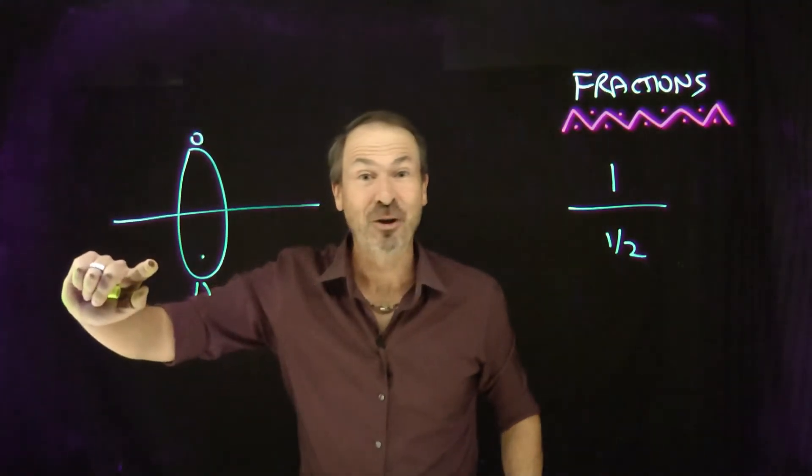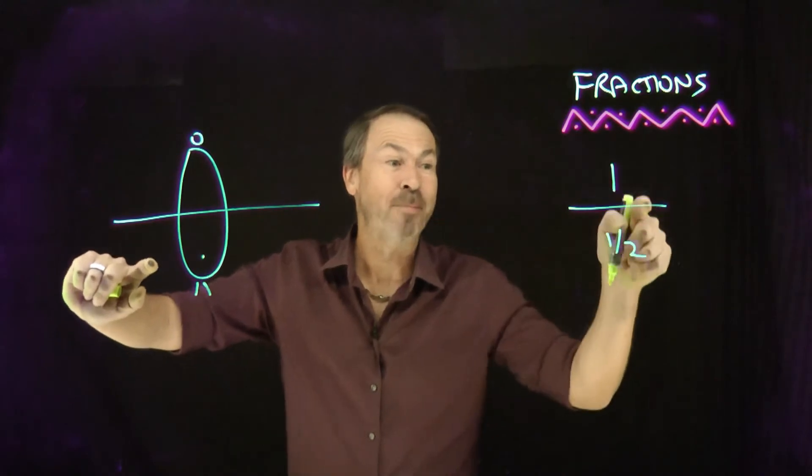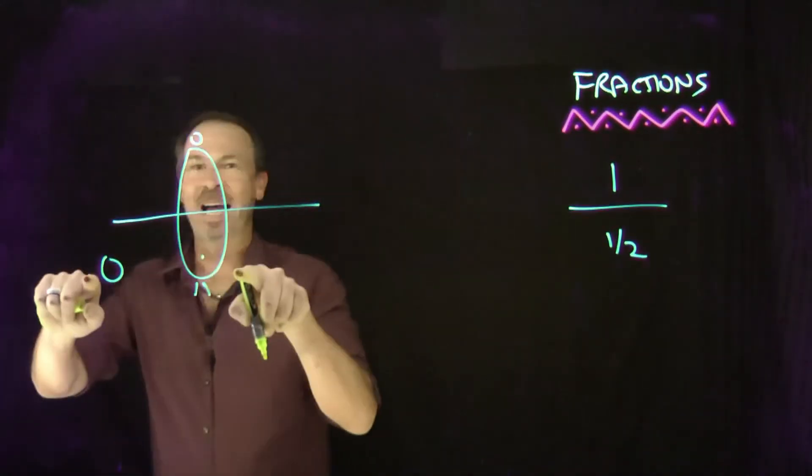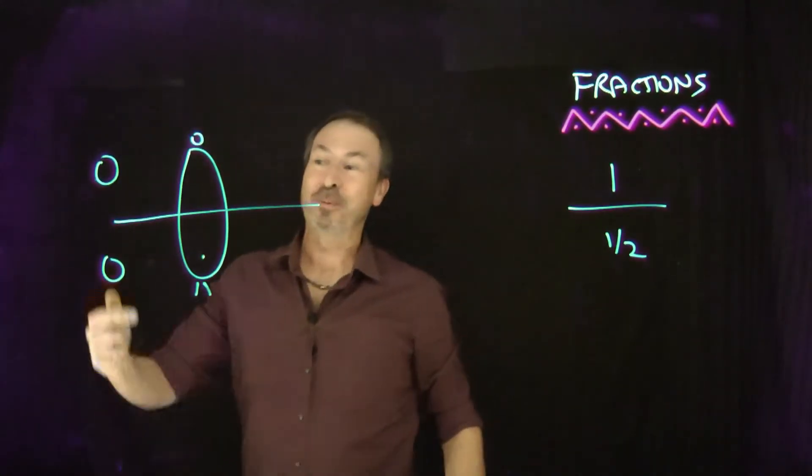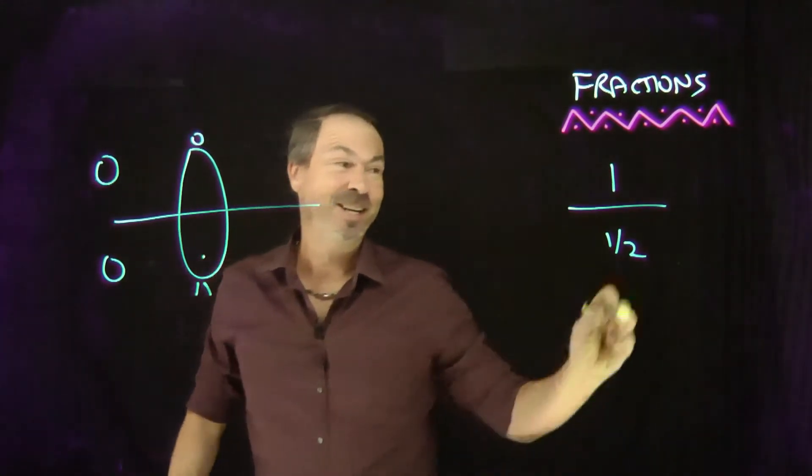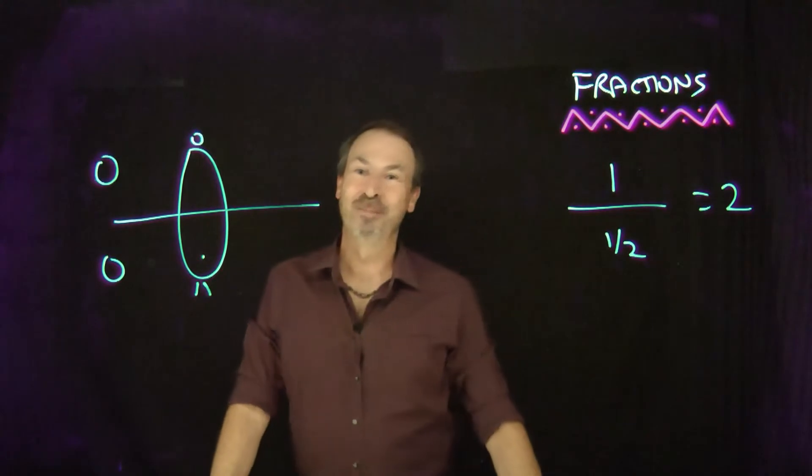But here's half a student. How much pies does it get? One half a student gets a whole pie. One pie for half a student. One pie for this half. There's another half a student. One pie for that half. So how much pie is that per whole student? That's two pies per student.